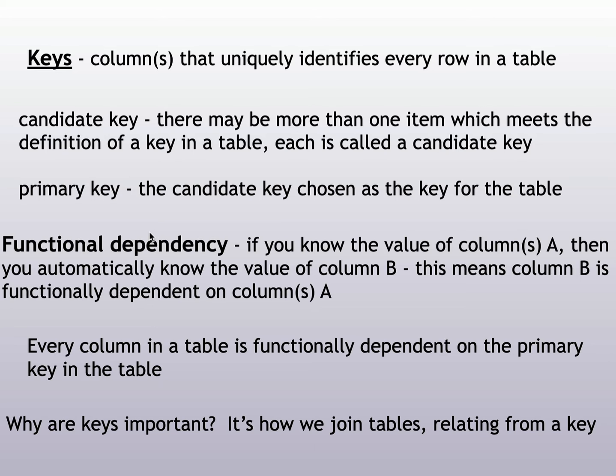The other concept you need to know is functional dependencies. If you know the value of one column, then you know the value for another column — it always comes exactly the same in that pairing. For example, if a particular part on a particular car is blue, I know what model the car is, because only that model had that blue-colored part. So if I know A, I know B — B is functionally dependent on A. And because a key uniquely identifies the row, every column in a table is functionally dependent on the primary key.